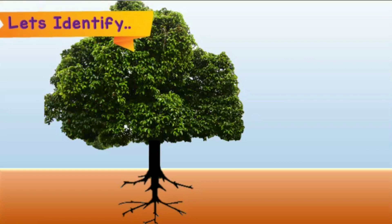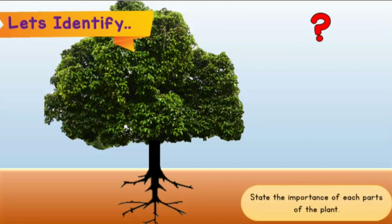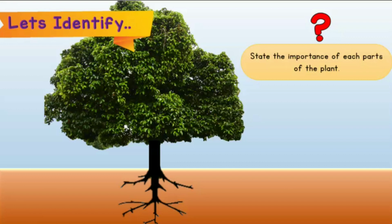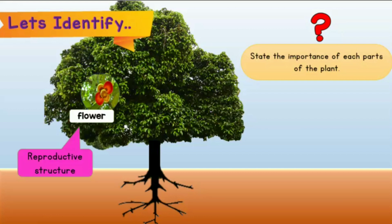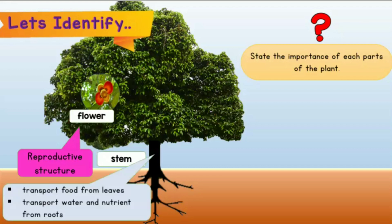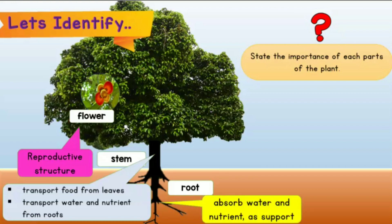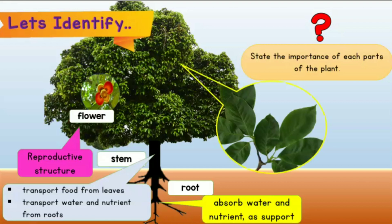Now let's identify — state the importance of each part of the plant. The flower: reproductive structure. Stem: transport food from the leaf, and transport water and nutrients from roots, and also as support. Leaves: make food.